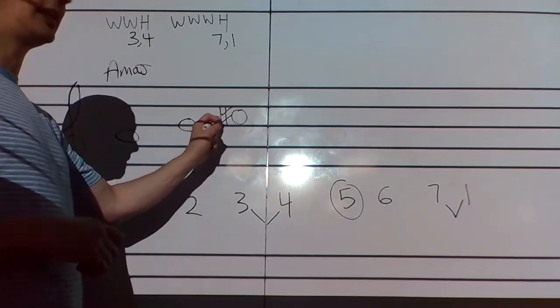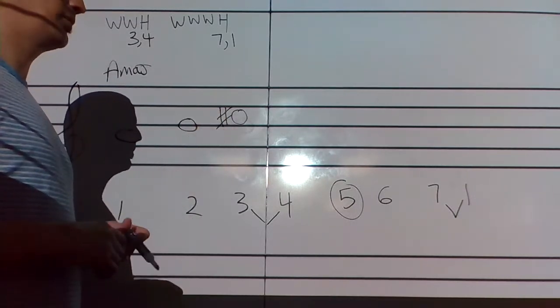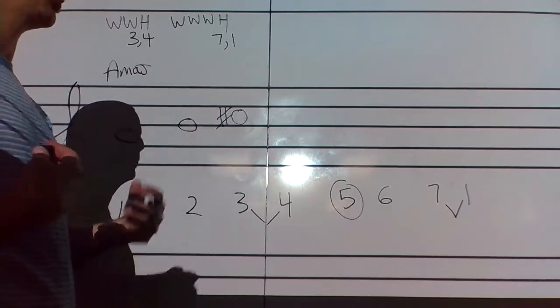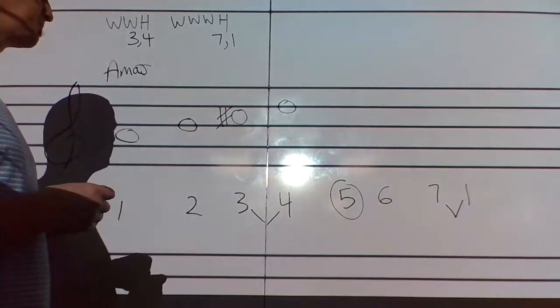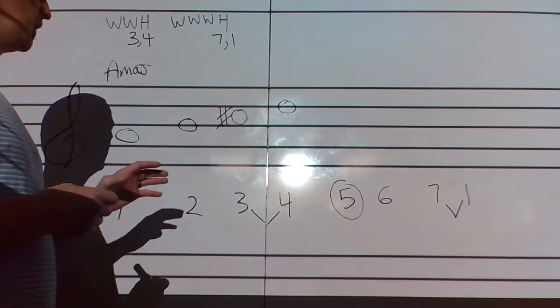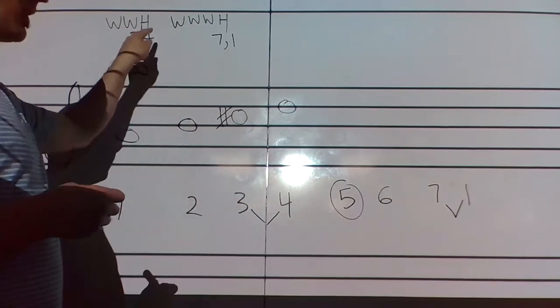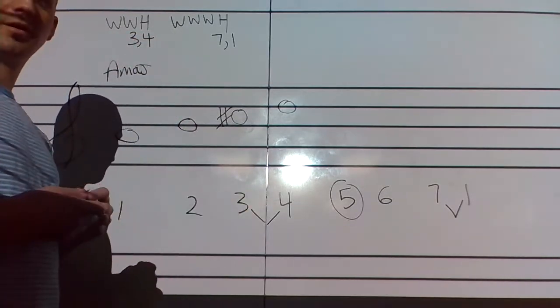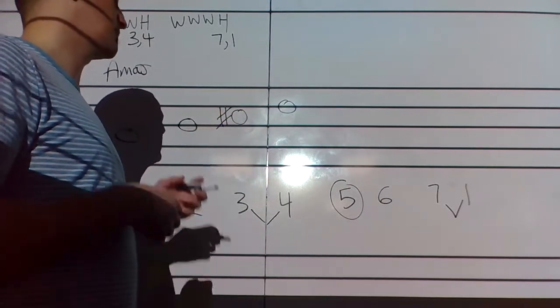Does everyone get that? B to C is a half step, so B to C sharp is a whole step because a sharp raises a note one half step. I'm on C, the next note has to be some kind of D. I need a half step here because I'm at that point in my pattern, and three to four is always a half step. C sharp to D is a half step, so I'm good.